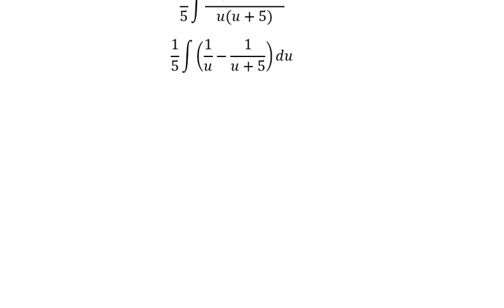And now we can get the final answer. The integral of 1 over u becomes ln of the absolute value of u. The integral of 1 over u plus 5 becomes ln of the absolute value of u plus 5.